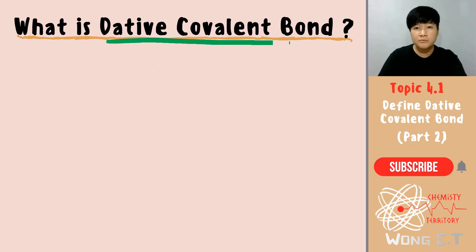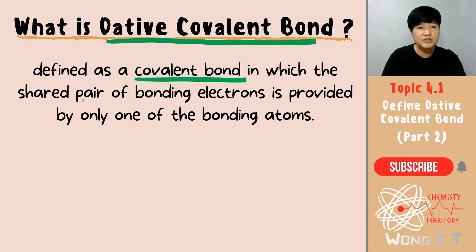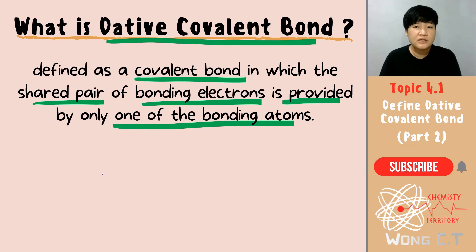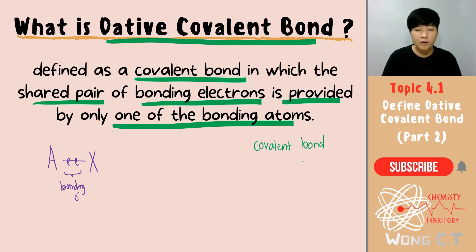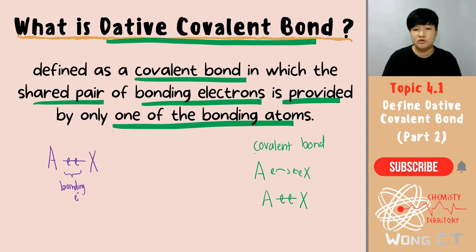So what is actually dative covalent bond and what makes it different from a normal covalent bond? A dative covalent bond is a covalent bond in which the shared pair of bonding electrons is provided by only one of the bonding atoms. For example, I have a bond between my A and my X. In a bond, there are two electrons — the bonding electrons sitting between the two atoms. In a normal covalent bond, A will donate one electron and X will donate one electron to be shared.